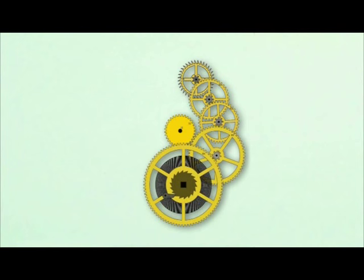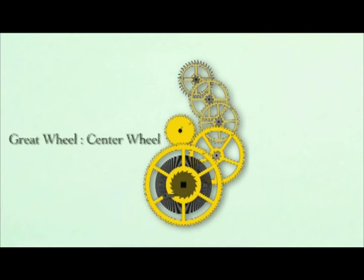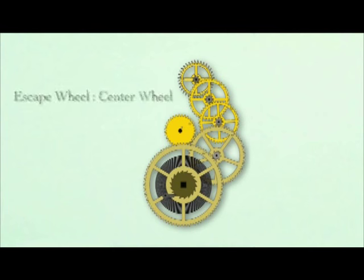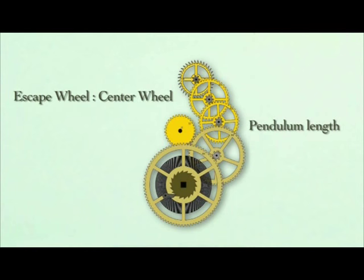So in summary, the gear ratio between the great wheel and the center wheel determines how many hours the clock will run between windings. The gear ratio between the center wheel and the escape wheel determines the length of the pendulum the clock will need to keep proper time.